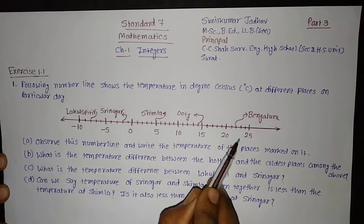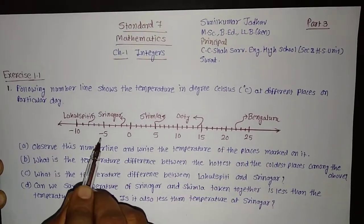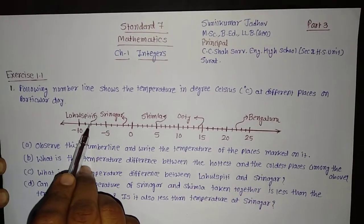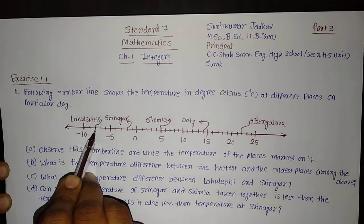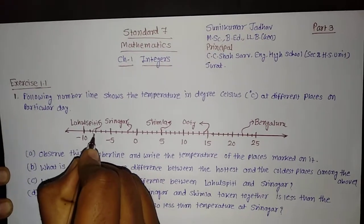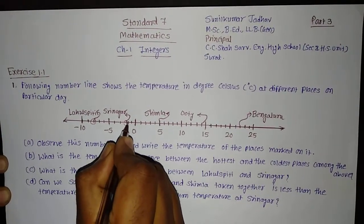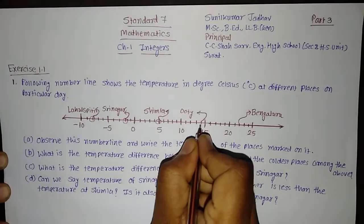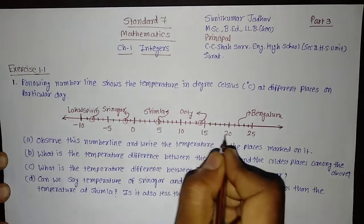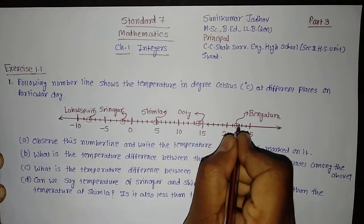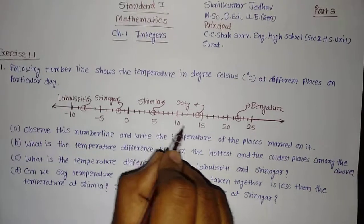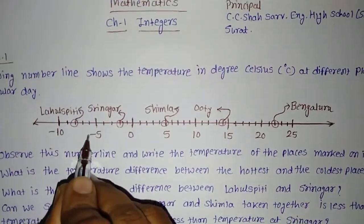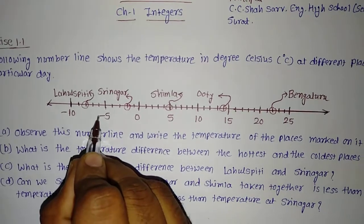As per the given temperature and the gap, you can see that the first place — Lahulspiti — the temperature is here. You can see Srinagar, it is here. Shimla, it is here. The temperature of Uti is here and the temperature of Bangaluru is here.